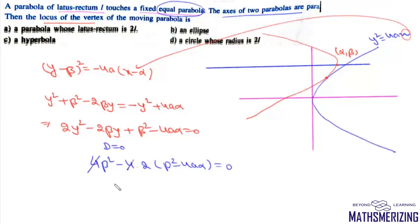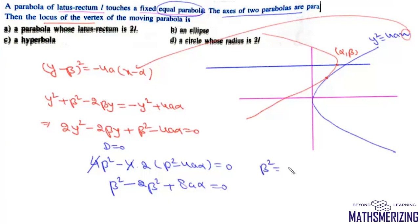The 4s cancel, giving β² − 2β² + 8aα = 0, which simplifies to β² = 8aα. So the locus of the vertex is y² = 8ax, which is a parabola.